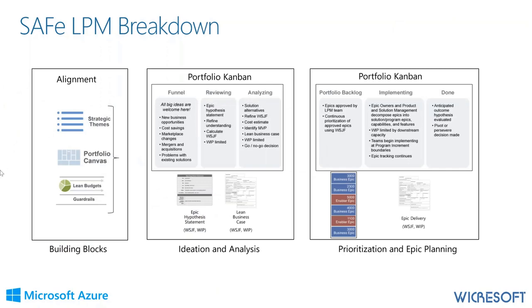Breaking it down further, LPM has three sections. First, you have your building blocks, which are really trying to drive alignment — leadership and the business have defined a strategy, and we have to align it to our portfolios, along with an amount of funds we're going to invest through lean budgets. The second major component is the first stages of the portfolio Kanban — ideation and analysis — where we create a funnel, a pipeline of work or demand, put it through a reviewing phase, and get to analyzing, where the go/no-go decision is made.